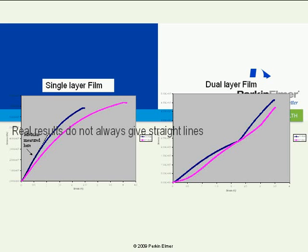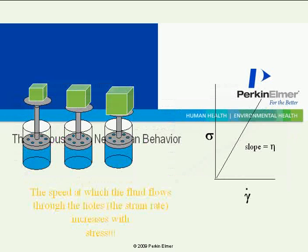If you take Young's modulus, you can see on the screen — I think I can highlight it right here — that if I calculate the modulus, I get a curvature away from that straight line. And that's because polyester, like French coffee pots, the speed at which the fluid goes through the hole increases with the strain rate.